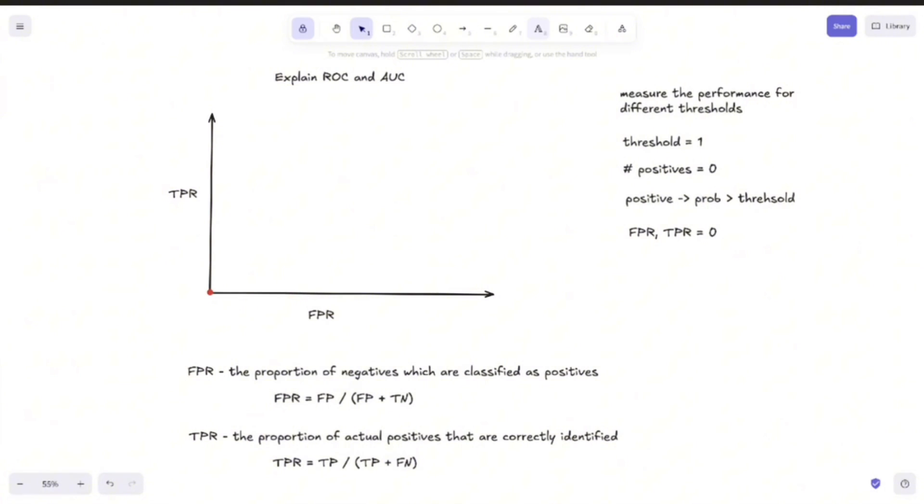What we do next is to slightly decrease the threshold and measure the performance of the model again. If we do that, let's say we decrease the value of the threshold by 0.1, then our next threshold will be equal to 0.9. And what we will observe if you have a reasonably trained model is that in this case, the FPR increases by a bit while the true positive rate increases by quite a lot.